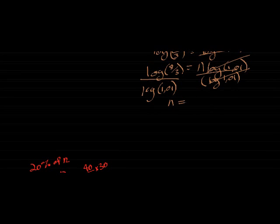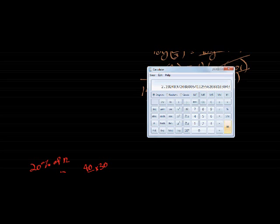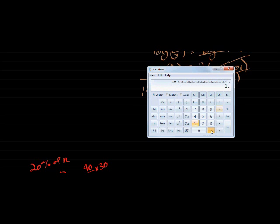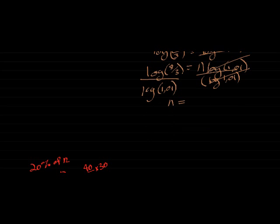And I get an answer of 8 divided by 3, log of that, divided by 1.01 log. Is equal to 98.57 payments. So how on earth are you going to make 98.57 payments? You're not.